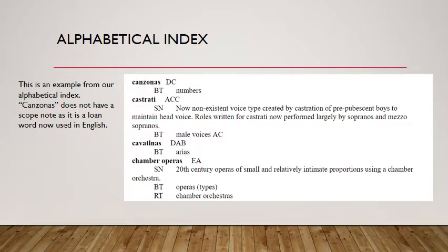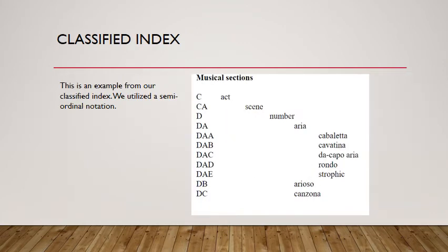This is an example of our final alphabetical index. See the scope note for the now non-existent voice type of castrati. Also note that canzonas, while it originated not in English, is now a loan word, and thus did not need to have a scope note. This is an example of our faceted index with its semi-ordinal notation. All of the aria instances listed are now loan words in English.